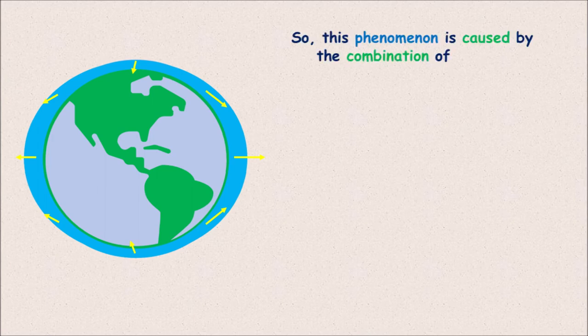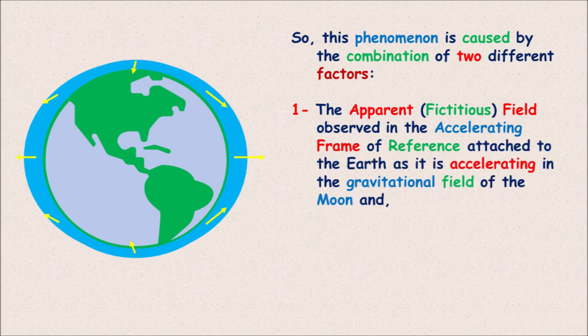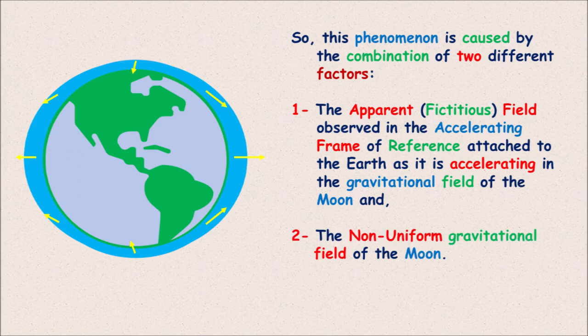So to review, this phenomenon is caused by the combination of two different factors. One, the apparent or fictitious field observed in the accelerating frame of reference attached to the earth as it is accelerating in the gravitational field of the moon. And the second one is the non-uniform gravitational field of the moon.